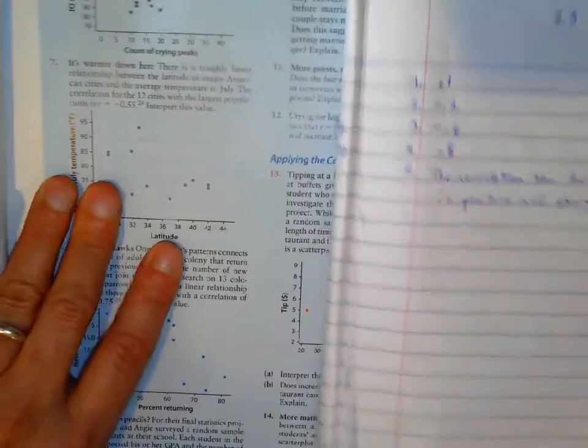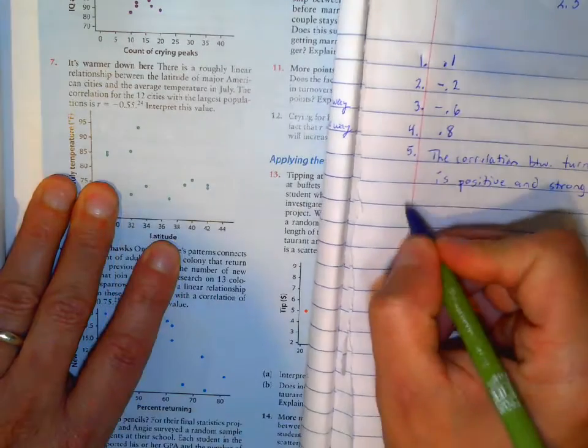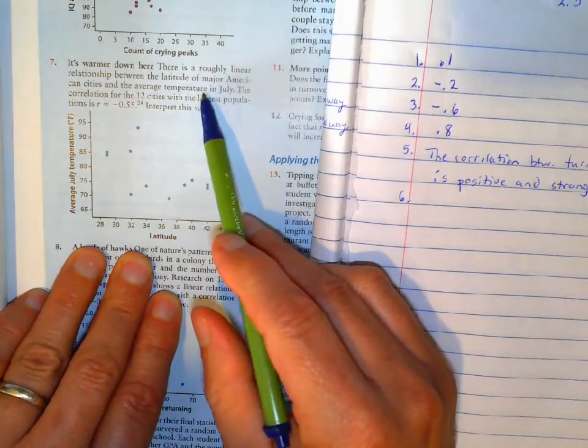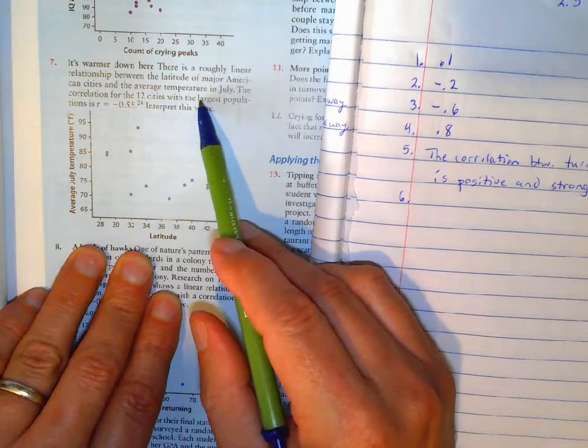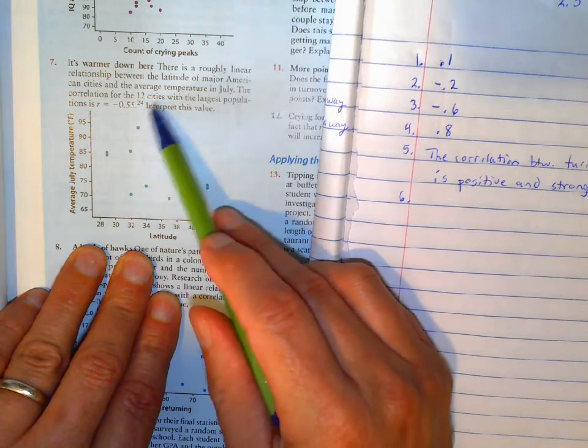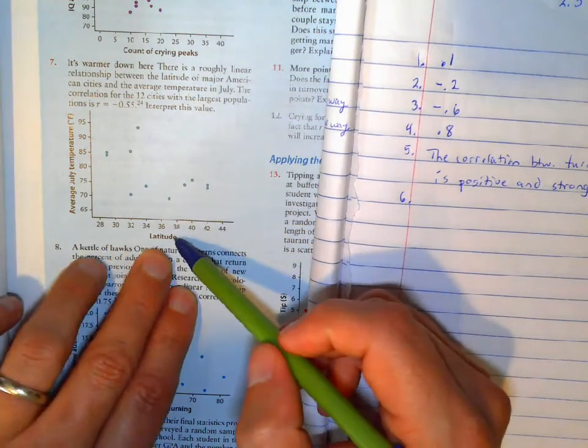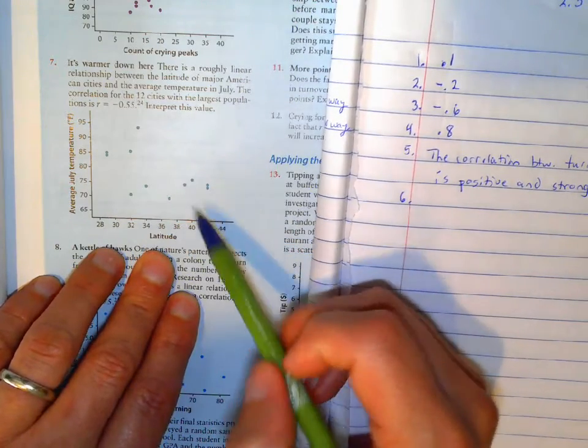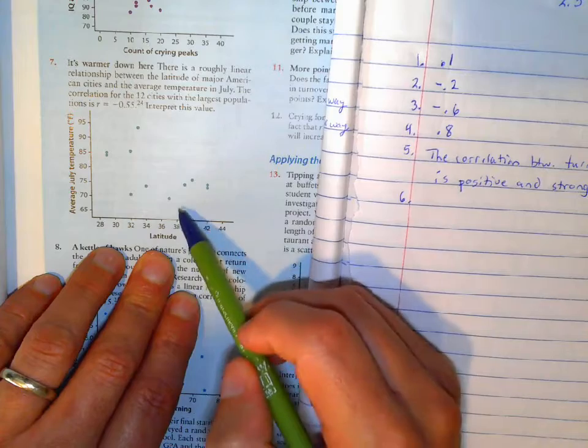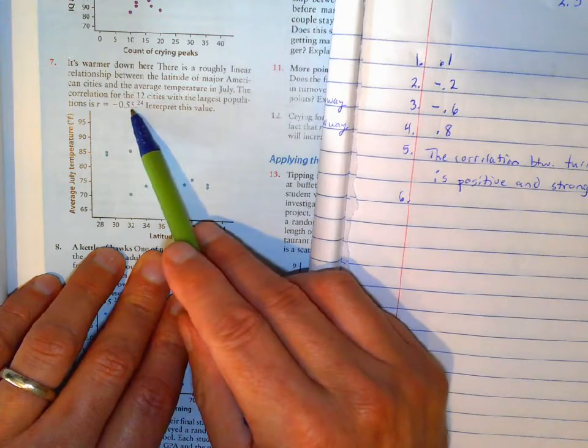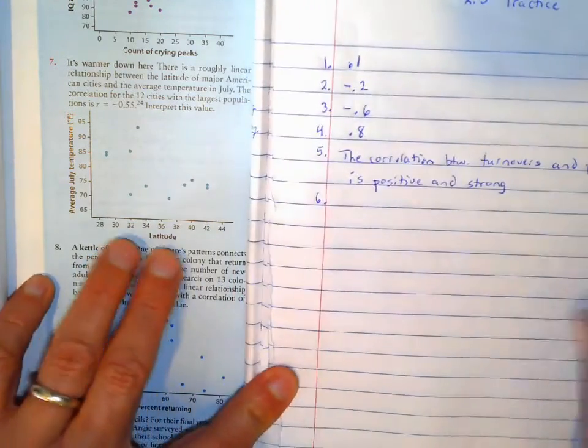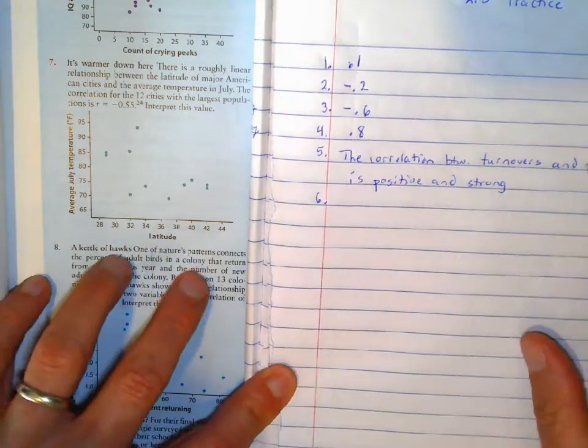The next one is this one here. So there's a roughly linear relationship between the latitude of major American cities and the average temperature in July. So there are 12 cities, the latitude of those cities, and then their temperature. So it gives you a correlation of negative 0.55. So it says that it's a negative and that it's moderate.